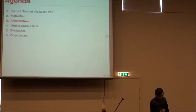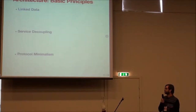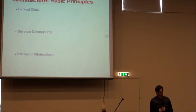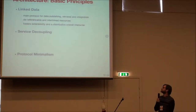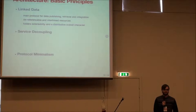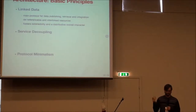Now let's talk about the architecture of a distributed semantic social network. First, three simple principles. The first one is linked data, which basically allows publishing and integrating resources without adding anything else. Linked data can be easily accessed from anywhere.